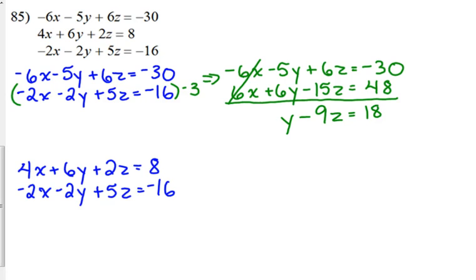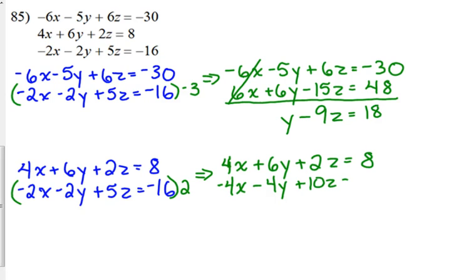So, for the second pairing, what do we need to do? Which equation, first or second, do we need to multiply? Second. By what? Positive two. Exactly. These already have opposite signs, so that's nice. We don't have to worry about changing any signs here. So, again, the first equation goes untouched here. Second one, multiplying by positive two, gives us negative 4x minus 4y plus 10z is equal to negative 32.